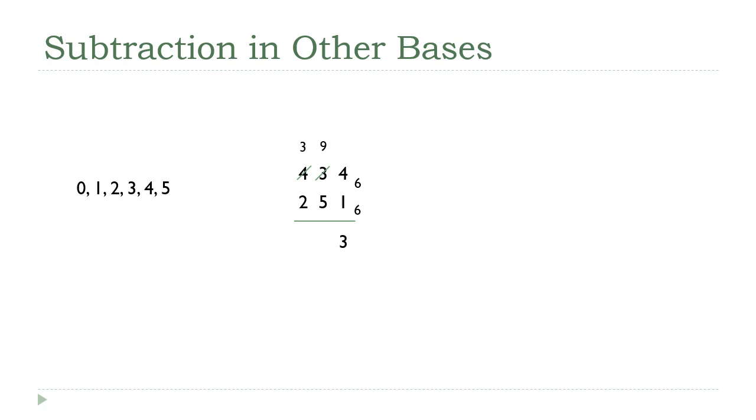So instead of putting a little 1 down there and making this 13, I'm going to put a 9. That's 3 plus 6. Now I can subtract. 9 minus 5 is 4. Look at the next column. 3 minus 2 is 1. And I'm done. Almost done. Got to put the base in there.